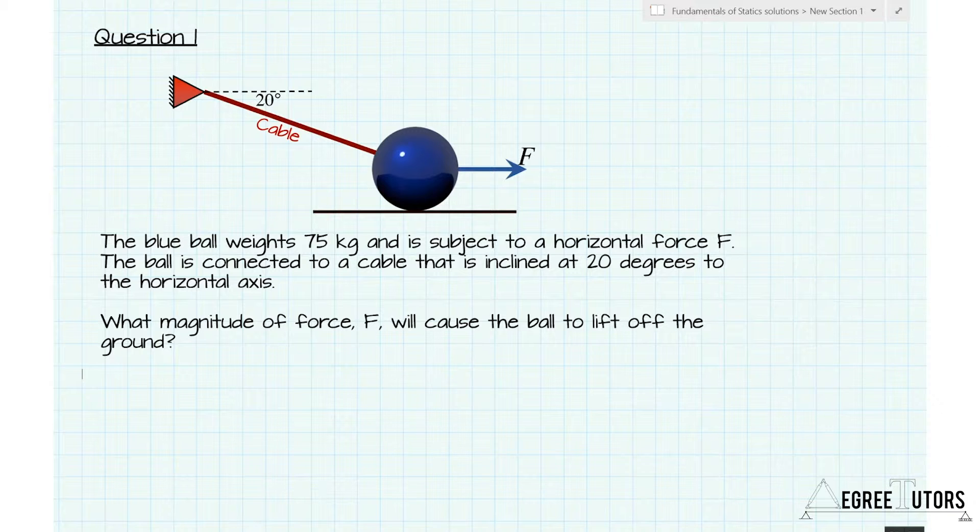In this question we have a ball that's resting on the ground and it is attached to a cable, and on the other end of that cable there is a support. So the cable is inclined at an angle of 20 degrees to the horizontal. Now the ball is subject to a force F which is pulling horizontally to the right. So we can imagine that if we were to apply this force and continue to increase the magnitude of the force F, at some point that ball is going to lift up off the ground.